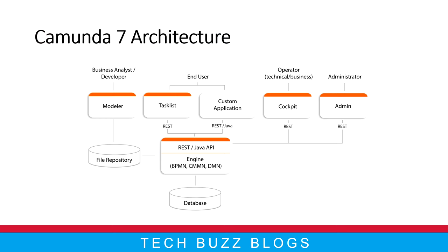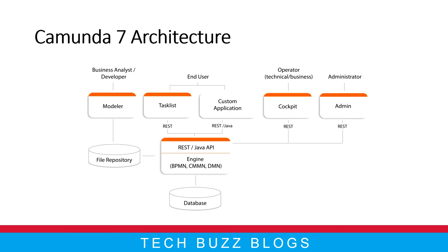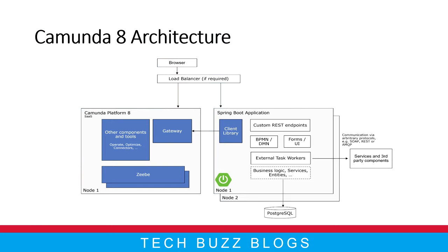Now let me jump into Camunda 8 architecture. The main difference between the old Camunda 7 and Camunda 8 is this: Camunda 7 is an embedded architecture, while Camunda 8 is a cloud-based architecture — that is the major difference. When you want to work cloud-based, you get a lot of additional features, which is the main reason they introduced the cloud-based approach in Camunda 8.